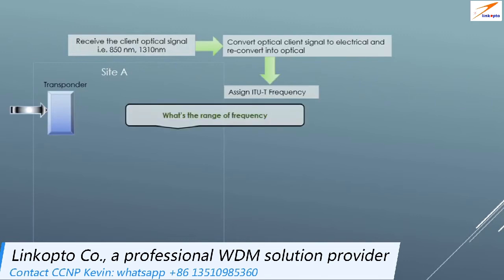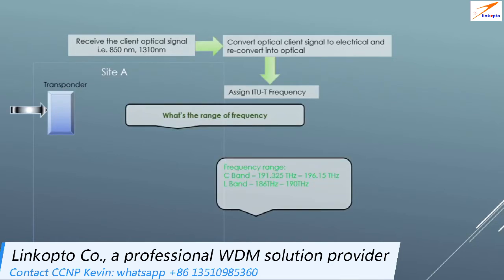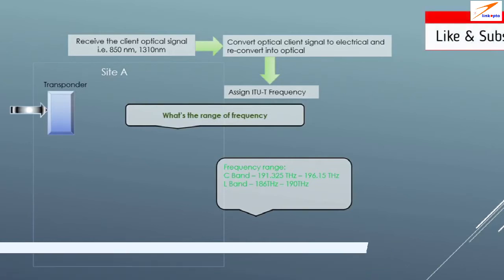The question may ask about the range of frequency. In DWDM we use two bands: C band and L band. C band is mostly used by all companies, but now most companies are moving toward L band also. For C band, the range is 191.325 THz to 196.15 THz. These frequency ranges vary based on different manufacturers and their cards, but answering within this range is good enough.